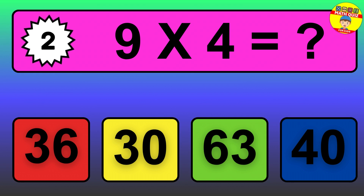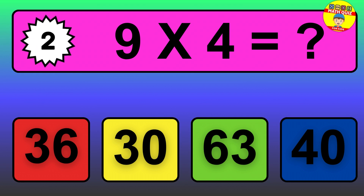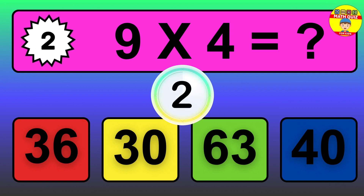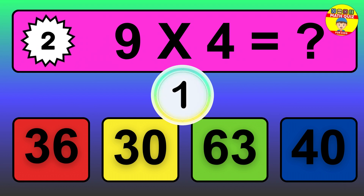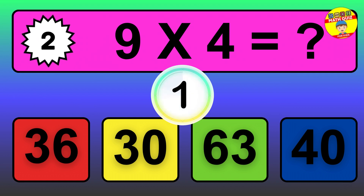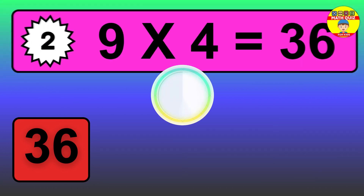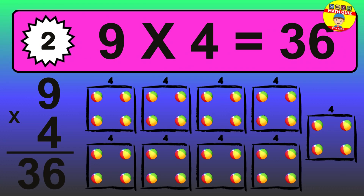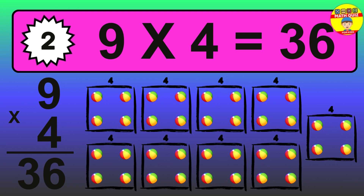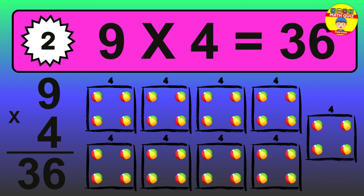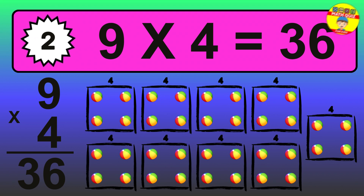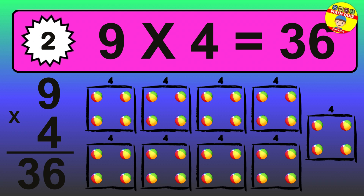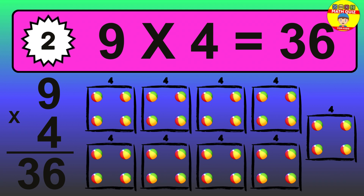Question 2. 9 times 4 equals what? The answer is 9 times 4 is 36. To calculate, we have 9 groups with 4 balls each one. So, how many balls do we have? 36 balls.